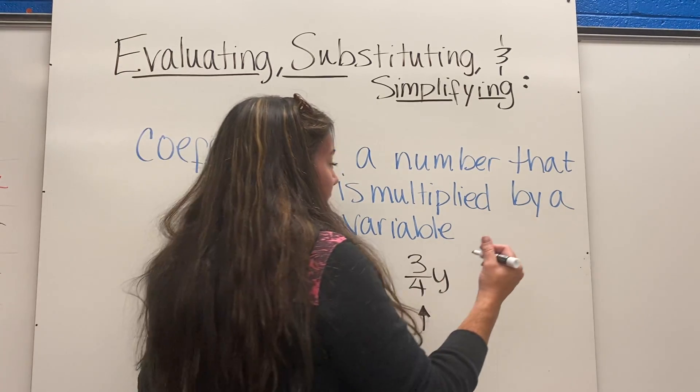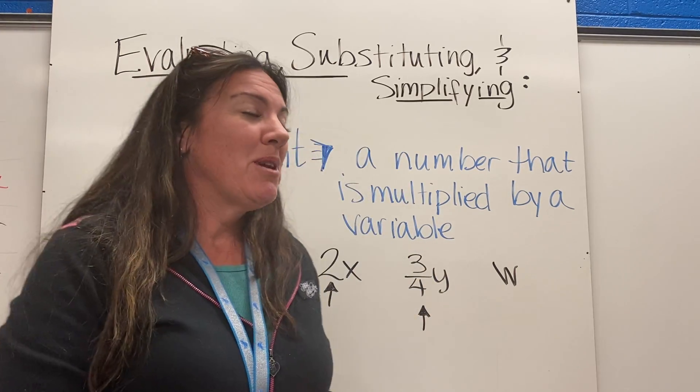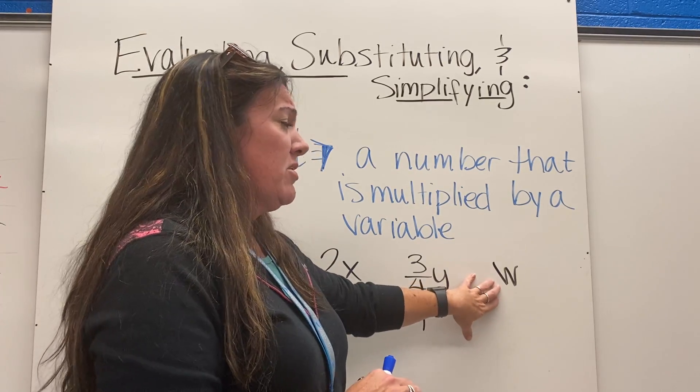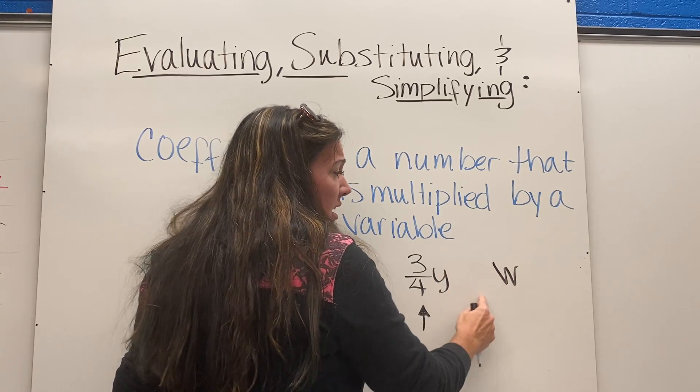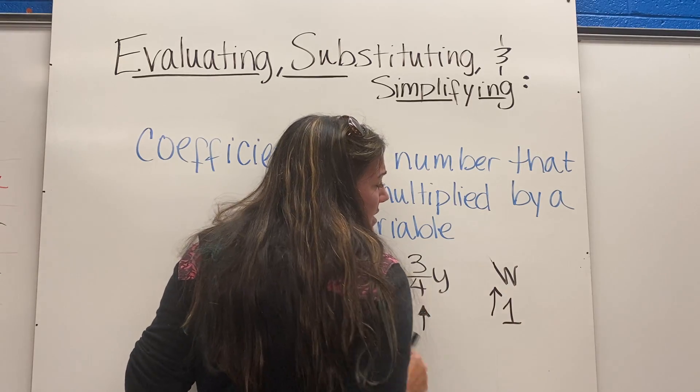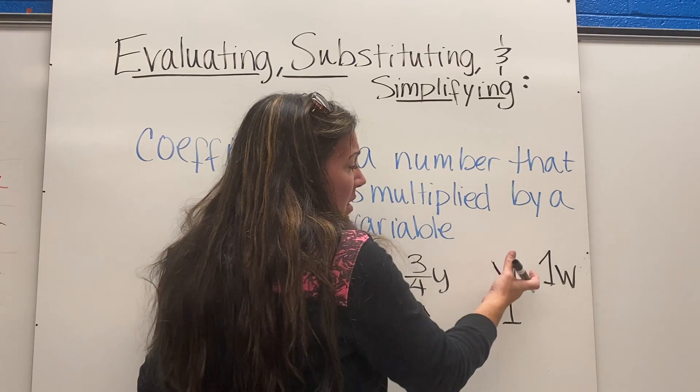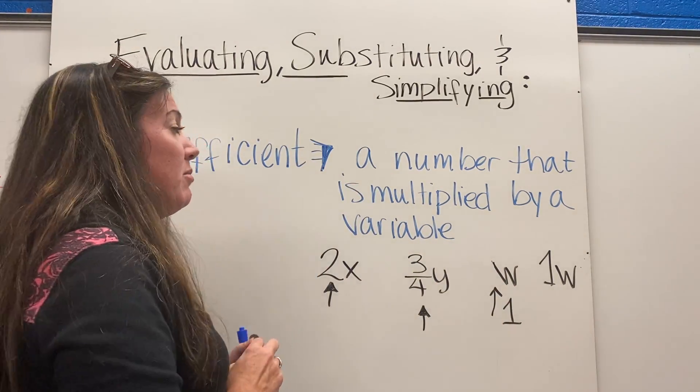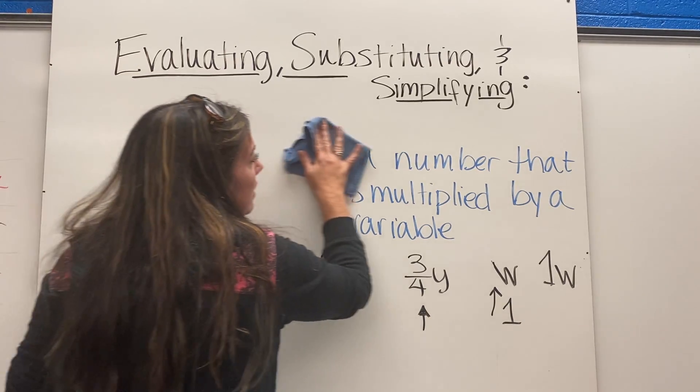What if you just have a w and there's no number in front? If the coefficient is the number being multiplied by it, it looks like there's nothing there. But if we were to multiply this by zero it would go away. So if you don't see a number in front of it, it is really just a one. Some people feel more comfortable writing 1w instead, and that's fine, mathematically it's the same thing.